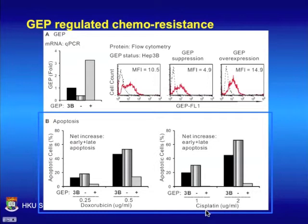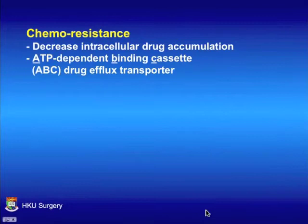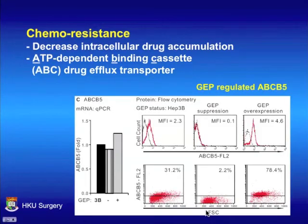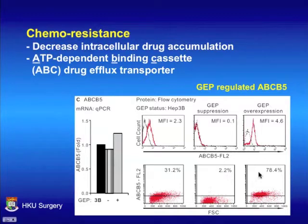Does GEP regulate chemoresistance? The next question concerns the signaling mechanism. The common mechanism is decreased intracellular drug accumulation through the ATP-dependent binding cassette, ABC, drug efflux transporter. We screened a number of drug transporters and observed that GEP regulated ABCB5. At both RNA and protein levels, GEP suppression decreased ABCB5 level, and GEP overexpression increased ABCB5 level.